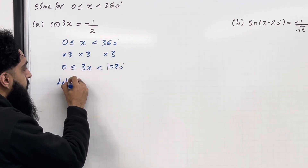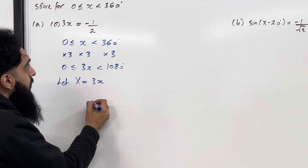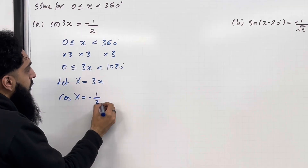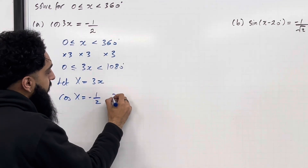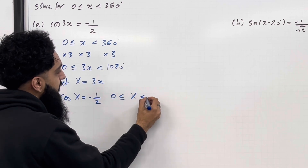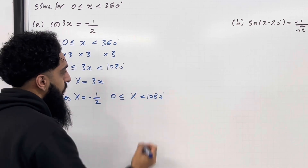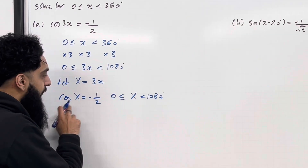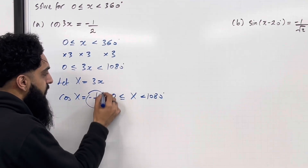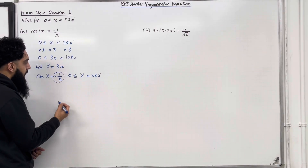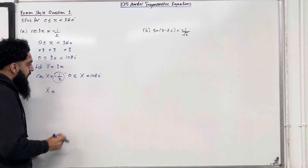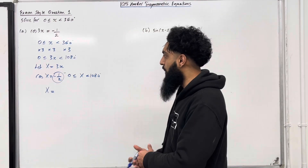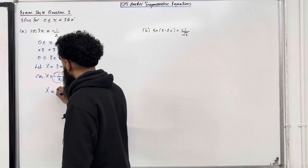Now I'm going to let capital X equal 3x. So we can rewrite this equation as cos capital X equals minus 1 over 2, and we can rewrite this interval as 0 is less than or equal to capital X, which is less than 1080 degrees. We're going to proceed by solving for capital X. We can circle the minus 1 over 2, which is a negative value. Now we work out the principal solution: capital X equals cos inverse of minus 1 over 2, which gives 120 degrees.